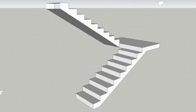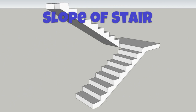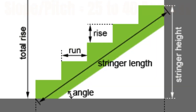Question 6. What should be the standard slope of a staircase? Answer: According to IS-456, the slope or pitch of the stair should be between 25 degrees to 40 degrees.